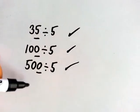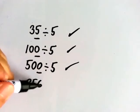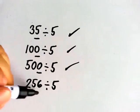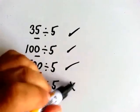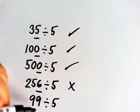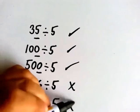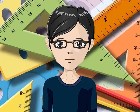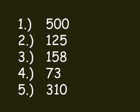Is 256 divisible by 5? No, it's not — it doesn't end in 5 or 0. Is 99 divisible by 5? No, it's not — it doesn't end in 5 or 0. Now it's your turn. Kaya naman. Answer with yes or no. If the number is divisible by 5, answer yes. If not, answer no. You can do this mentally or sa notebook nyo.